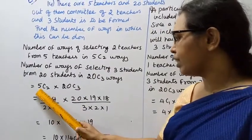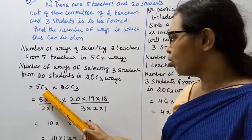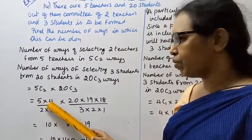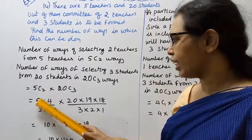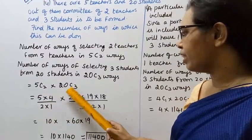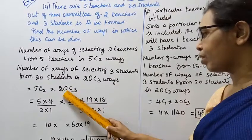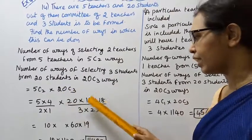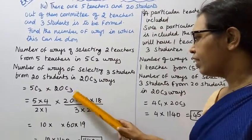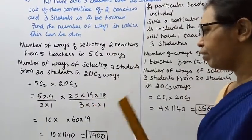5C2 equals 5 into 4, divided by 2 into 1. For 20C3, we take 3 numbers decreasing: 20, 19, 18, divided by 3 into 2 into 1.